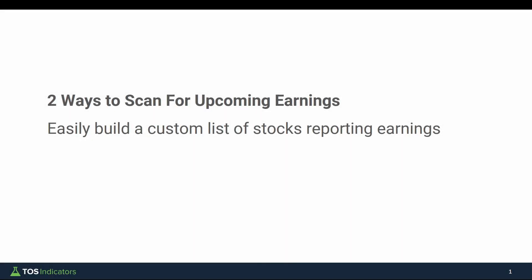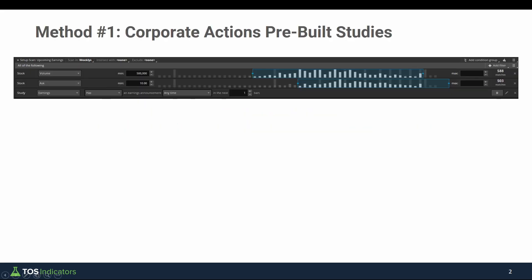With earnings around the corner, in today's video I'll show you two simple ways to scan for upcoming earnings using the scan tab inside of thinkorswim. The benefit of using the scan tab is you can layer on your own personal set of conditions, which lets you create a custom list of stocks reporting earnings that you care about. Method number one is the simple easy method — using a pre-built study inside of thinkorswim which you can find in the corporate actions tab.